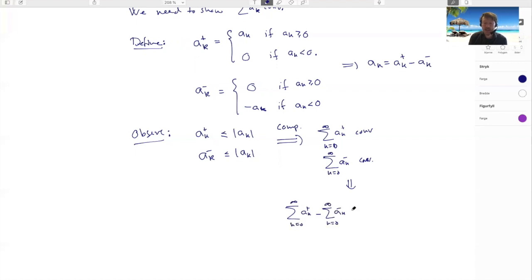And if this thing and this thing converges, I can pair them together. So I get now k goes from zero to infinity of a_k^+ minus a_k^-. But this difference here was just my a_k's. So now I'm getting that this thing here appears. So this converges. Since this converges and this converges, since both are convergent, I'm allowed to do this. But this is just exactly this. And we are done.